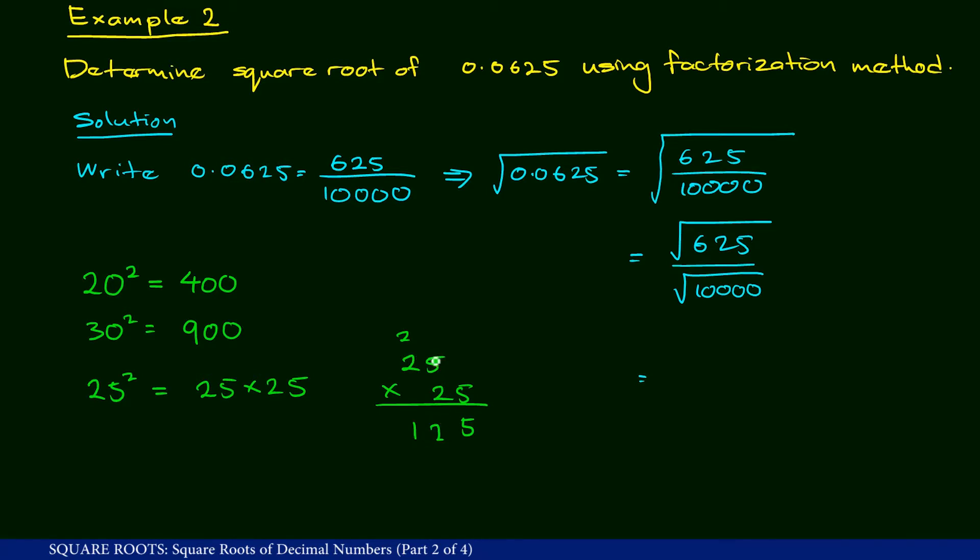So now 25 times 2. 5 times 2 is 10 with 1 here. Let me just rub this one off.